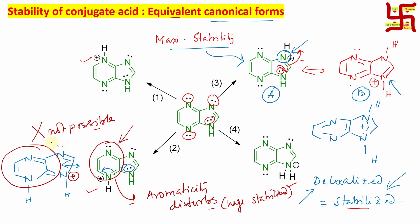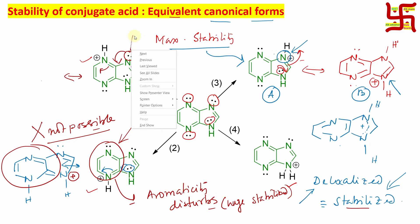You might also expect that this lone pair can come, push, and open here. Yes, but first, aromaticity would be disrupted. Second, and more importantly, this lone pair is in an sp2 hybridized orbital — not in a p orbital. The pi bond is formed by p orbital overlap between carbon and nitrogen. So overlap between this sp2 lone pair and the pi bond is not at all possible. So this canonical form is also not possible.